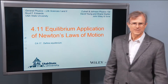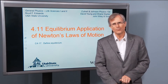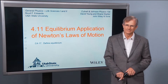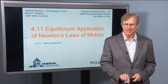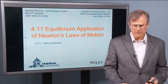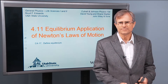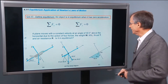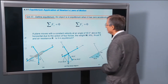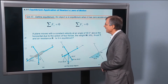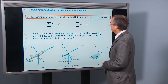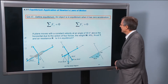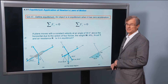The last section in chapter 4 — we're going to talk about equilibrium. Let's define it: an object is in equilibrium when it has zero acceleration.